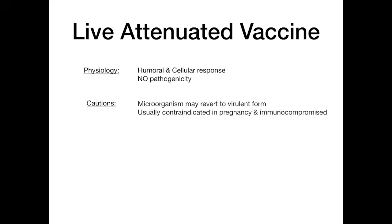It's for this reason that live attenuated vaccines are usually contraindicated in pregnant patients and immunocompromised patients. That said, one really high-yield point is that you can still give a live attenuated vaccine to an HIV-positive patient if they're not already immune — but in order to do so, you must ensure that their CD4 count is greater than 200, otherwise they could become very sick.